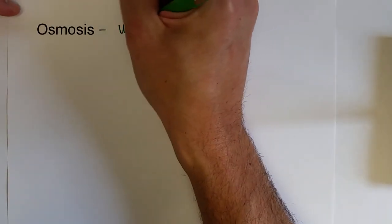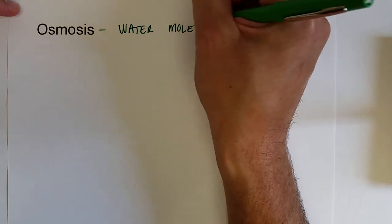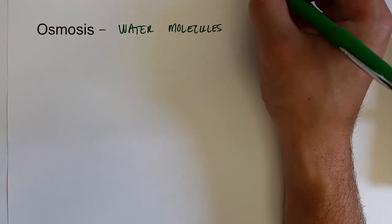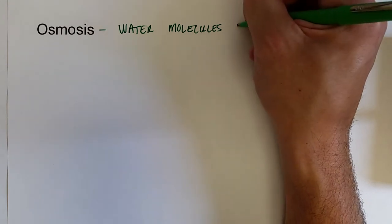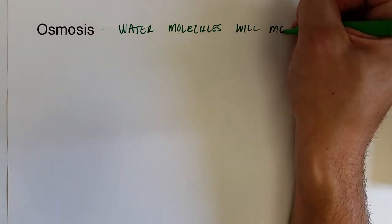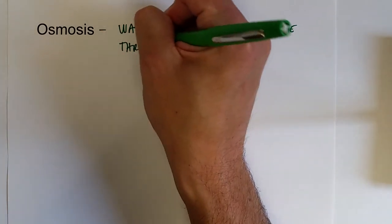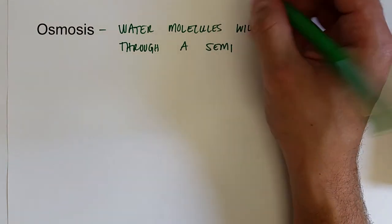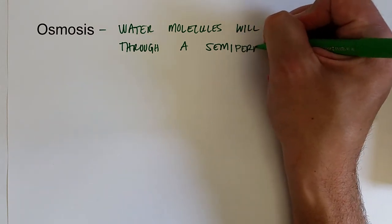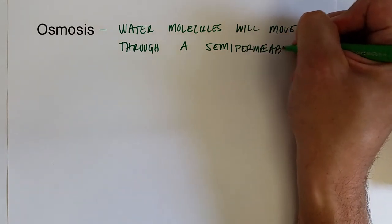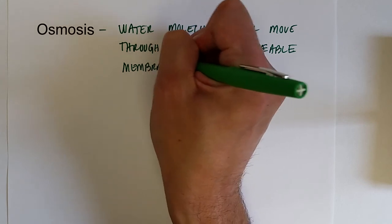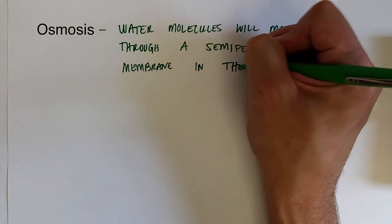Osmosis is essentially a process where water molecules move across a semipermeable membrane to follow the concentration gradient. The solution will move through a semipermeable membrane — which your cell has — in the direction of a concentration gradient, from high to low.